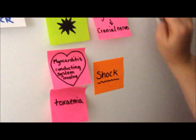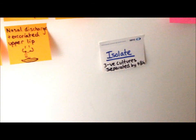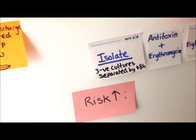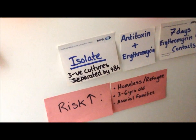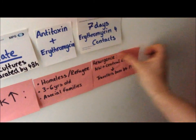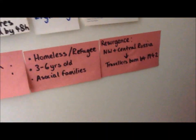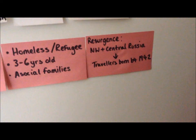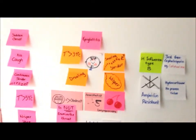In the treatment of diphtheria, it is important to isolate the patient. They need to be treated with the antitoxin and erythromycin. Contacts of the patient also need to be treated with seven days of erythromycin. Diphtheria risks are increased in the homeless, refugees, children between three and six years old, and asocial families. There has also been a resurgence of diphtheria in northwest and central Russia, meaning travellers born before 1942 are at increased risk, as there was no diphtheria vaccination programme before that date.